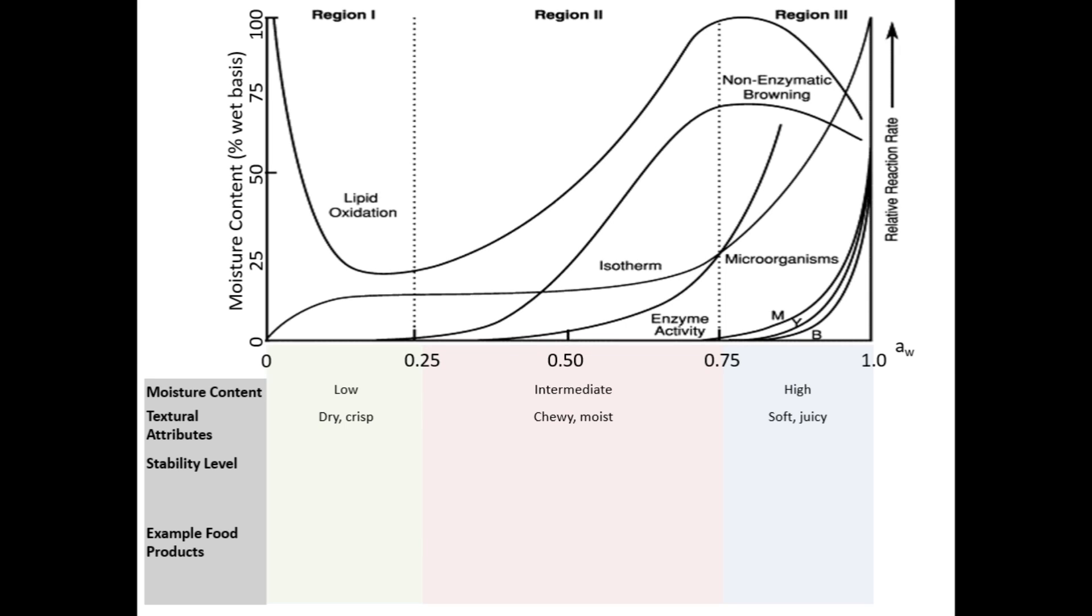We can see that in region 1, lipid oxidation is the main stability concern, and most other factors like microbial growth, non-enzymatic browning, and enzyme activity are not problematic. In region 2, lipid oxidation, non-enzymatic browning, and enzyme activity can occur to some extent, but microbial growth is still not a big concern.